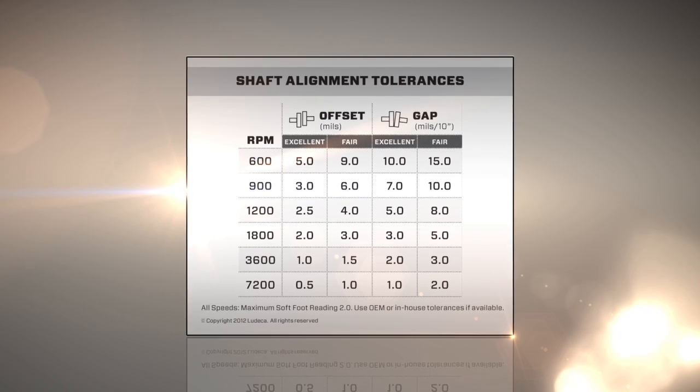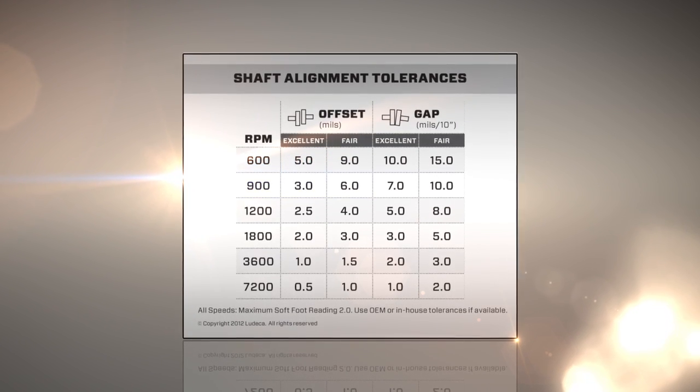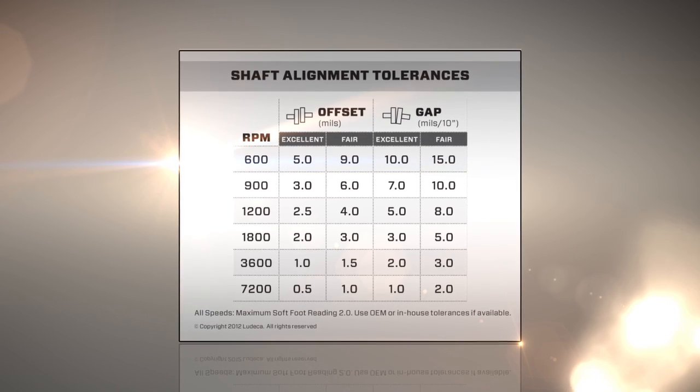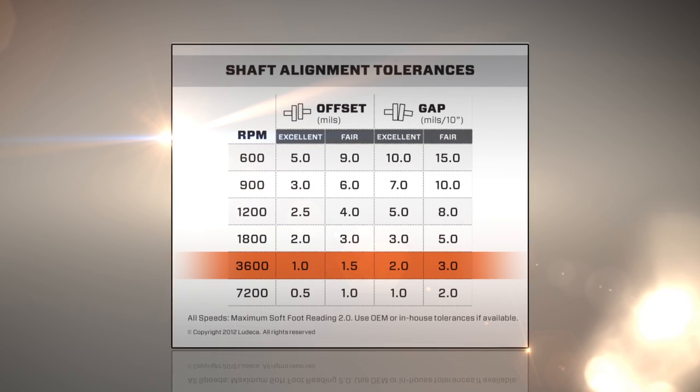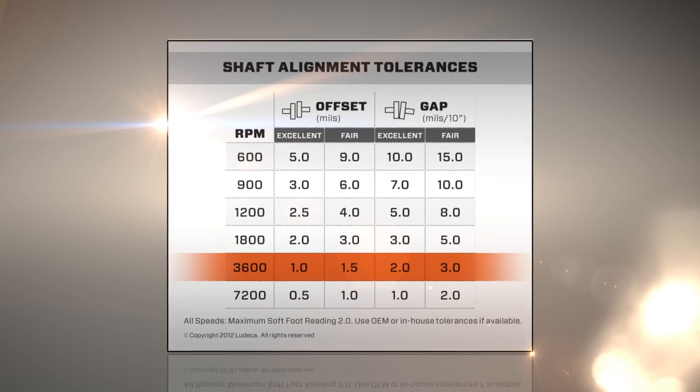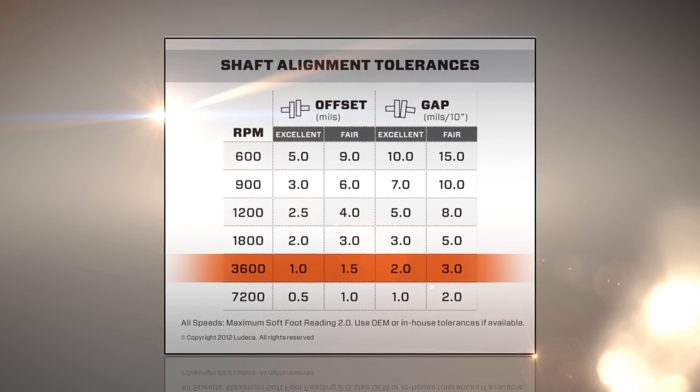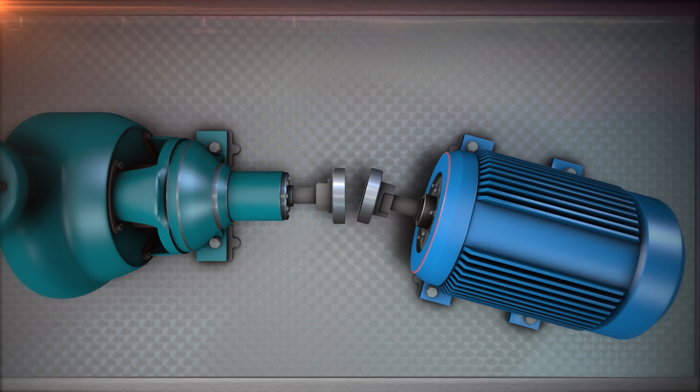We will explain about these tolerances in a future video. If this was a 3600 RPM motor, these would be the tolerances.